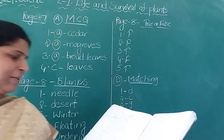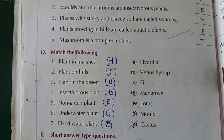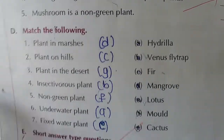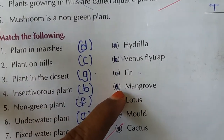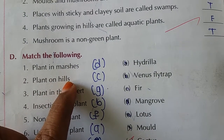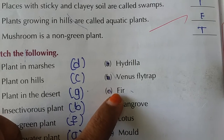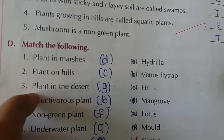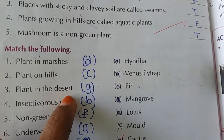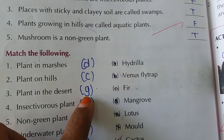Now imagine plants in marshes - which plants grow in marshes? Mangroves. Keep option D. Mangroves are the plants that grow in marshes. Now second question - plants on hills: fir and pine and cedar grow on hills. They are given fir here - F-I-R. Plants on hills are fir, option C. Next question - plants in the desert: cactus grows in the desert, option G.